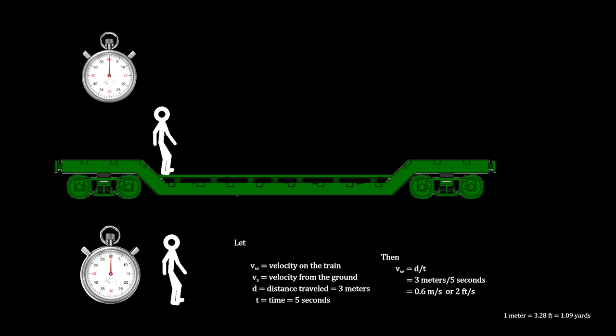Now picture the train car moving slowly to the right at 2 kilometers per hour, or 0.56 meters per second. This is the speed as measured by a person on the ground.